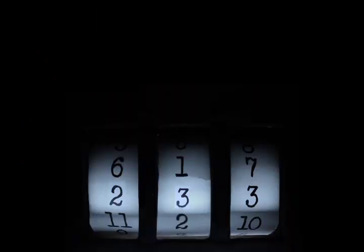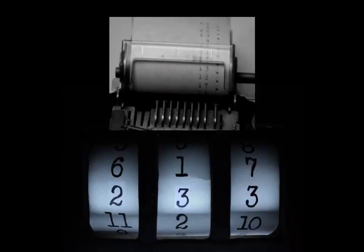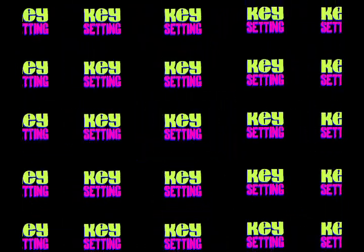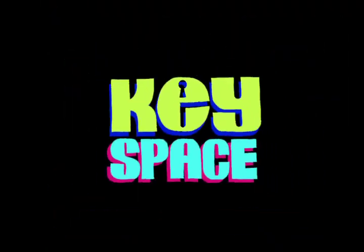Understand that each rotor position is equivalent to a location in this sequence. The initial machine state is known as the key setting, and the collection of all possible key settings defines the key space.